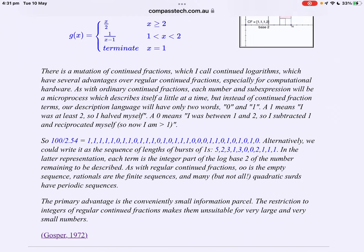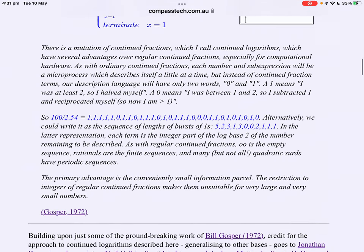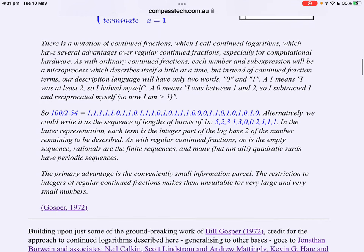Gosper has a flair for language. He described these as a mutation of continued fractions. He thought of each section as a microprocess, each part of the operation. But instead of continued fraction terms, instead of whole numbers, our description language would have only two words, zero and one. A one means I was at least two, so I halved myself. A zero, I was between one and two, so I subtracted one and reciprocated myself. So now I'm greater than one.